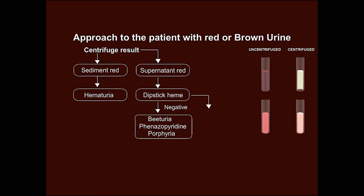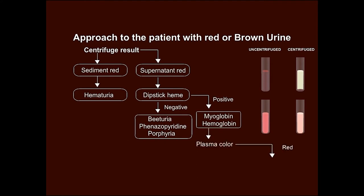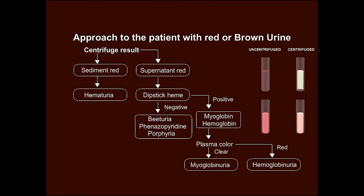If the dipstick test is positive, there can be presence of myoglobin or hemoglobin. If the plasma color is also red, it indicates hemoglobinuria. And if the plasma is clear, it indicates myoglobinuria.